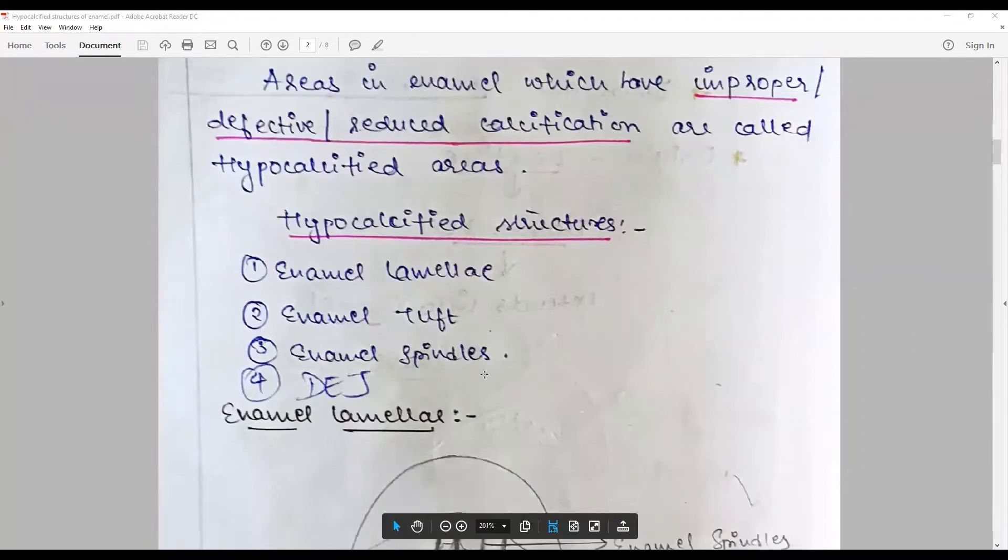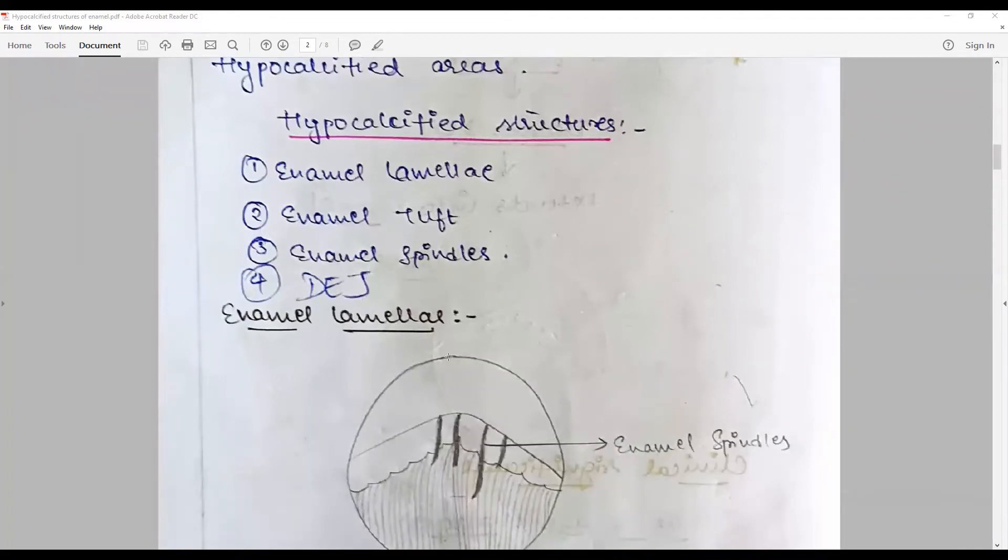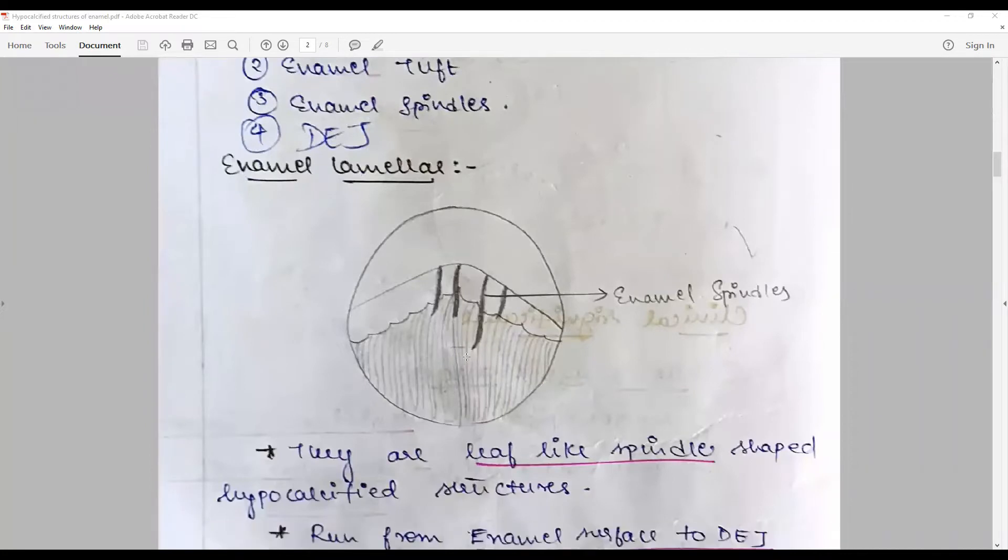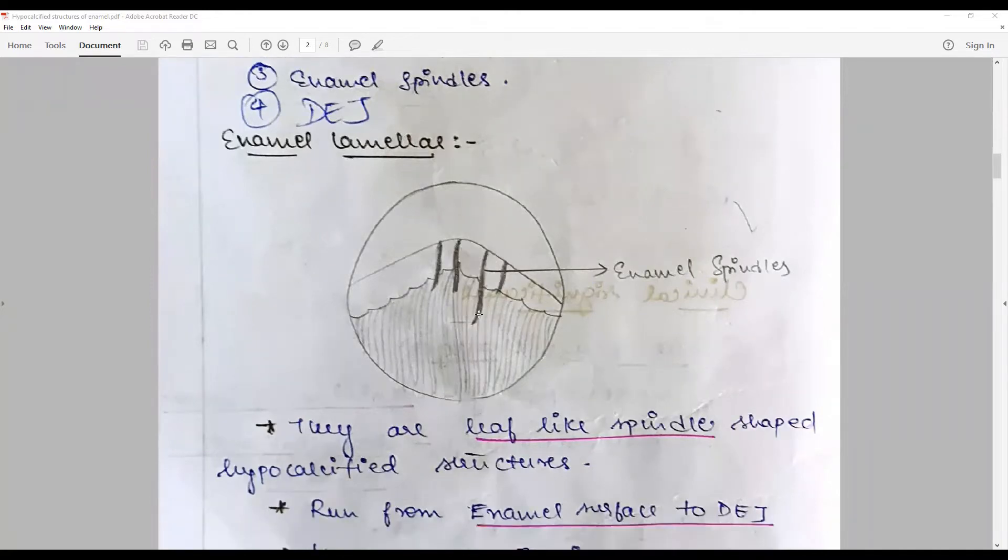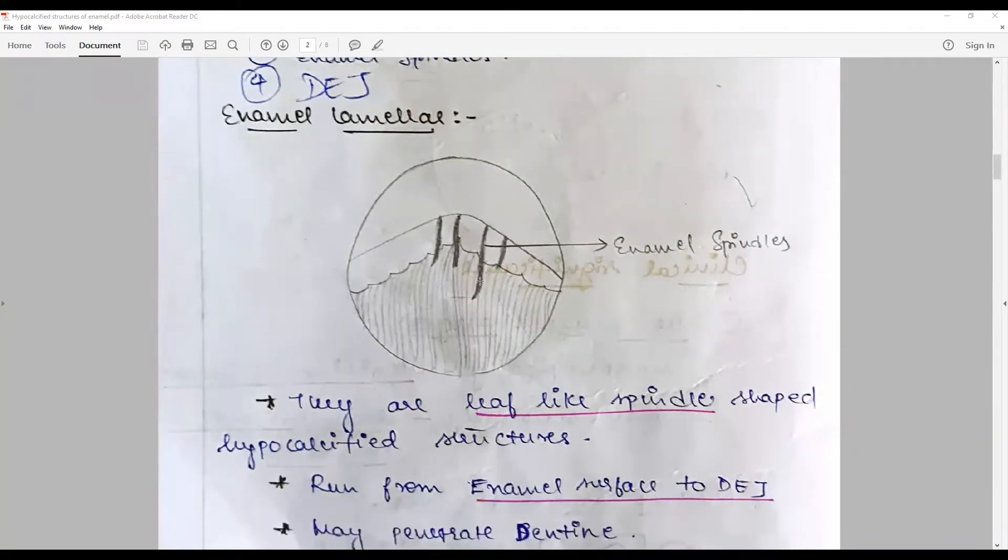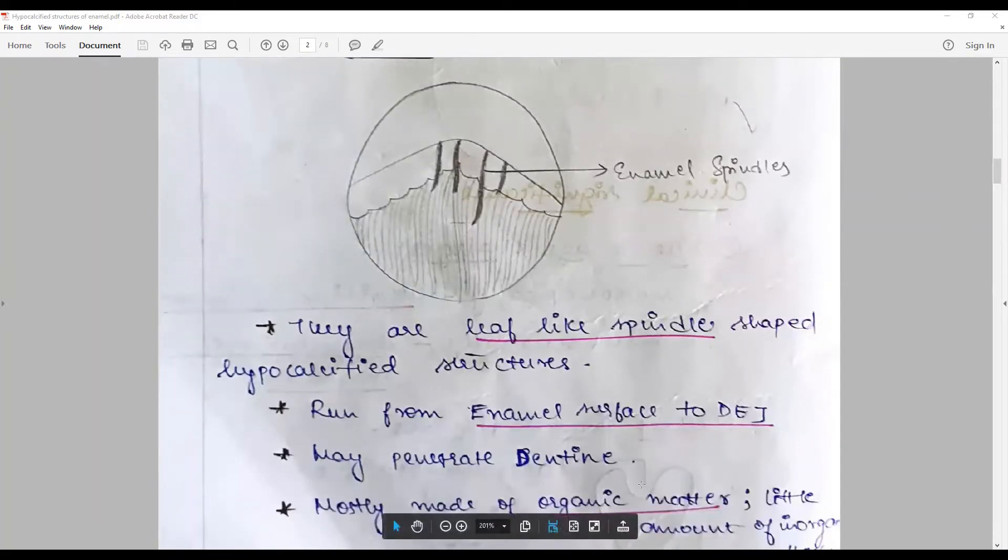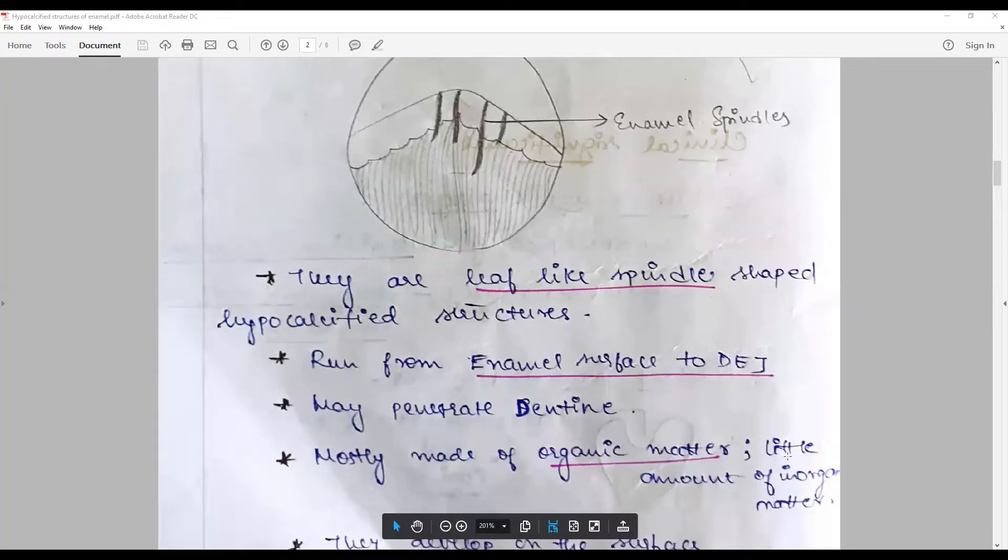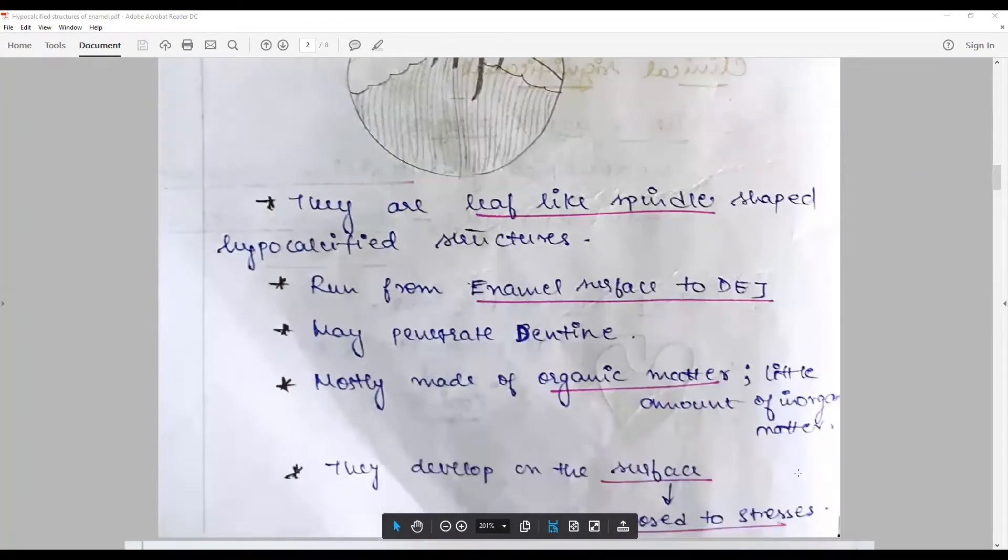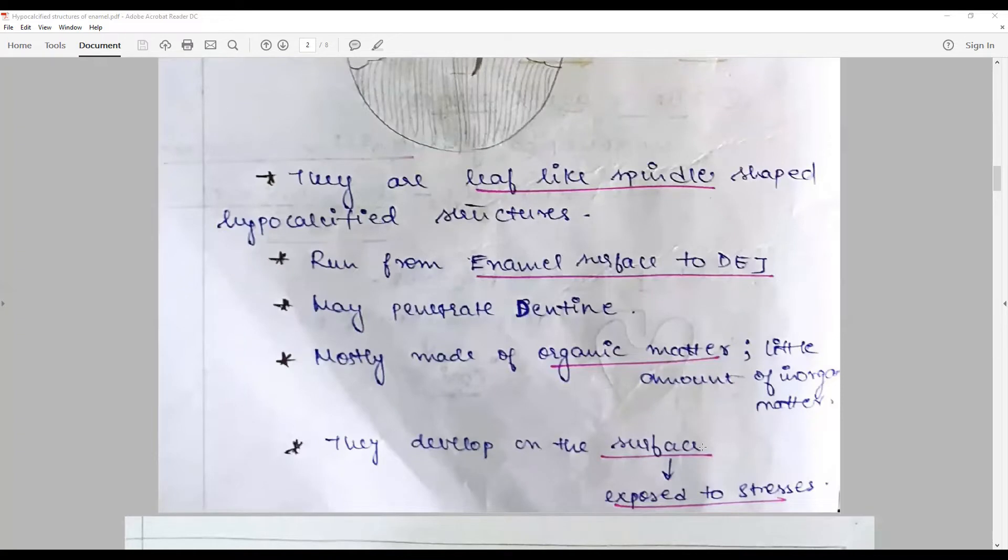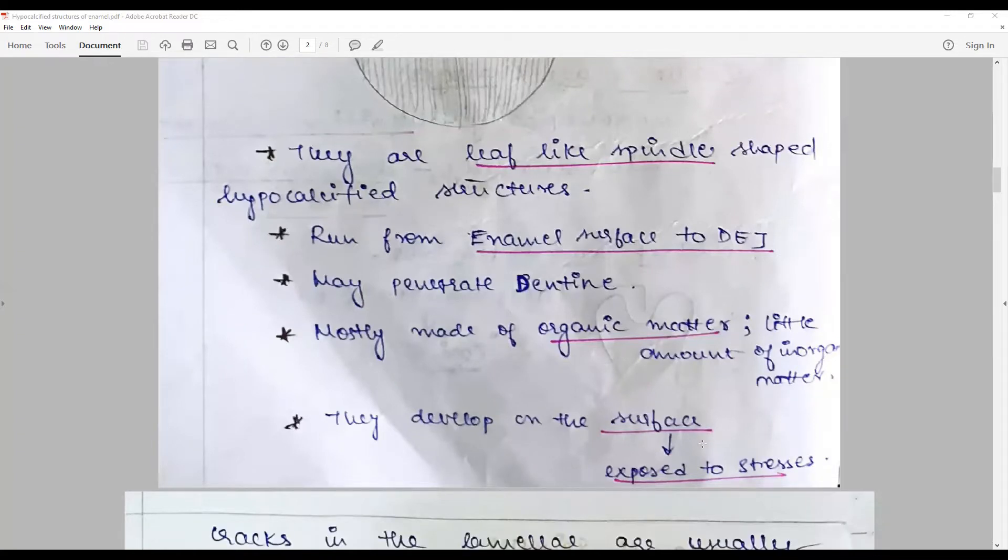Enamel lamellae are leaf-like, spindle-shaped hypocalcified structures. They run from the surface to the dentinoenamel junction and sometimes penetrate into the dentin. They are made up of organic matter and relatively less amount of inorganic matter as compared to normal enamel. They develop in response to surface exposure or stresses.